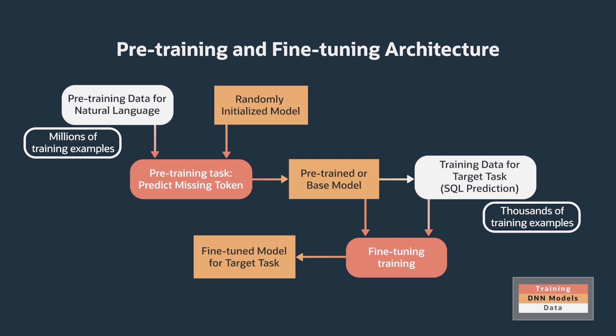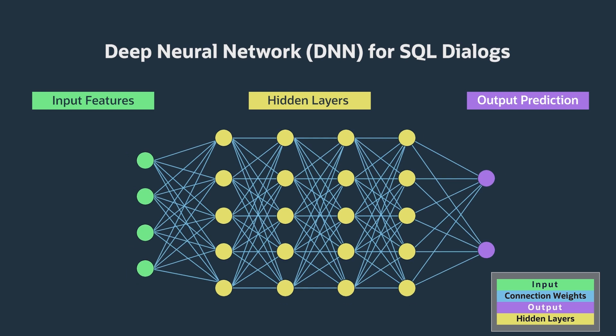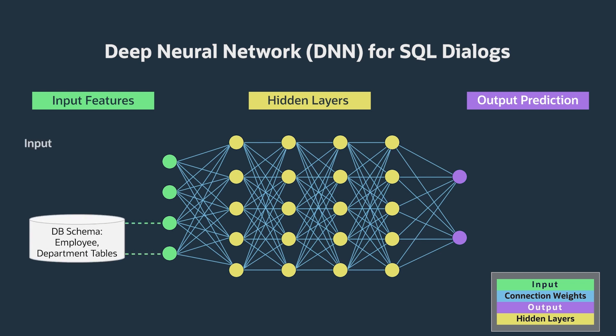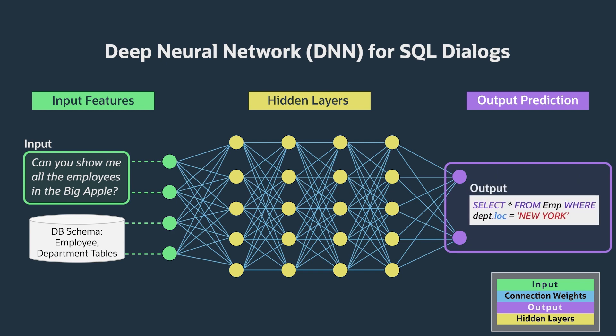This simplifies the training process, since the same generic model can be leveraged to generate multiple types of task-specific models, and it significantly reduces the task-specific training data requirements. We actually handle the training for our customers. We have different datasets that we use for the different stages of training. This lets SQL Dialogs run out of the box with no data supplied from the customer. Instead, we use the customer's database schema together with the customer's query to provide the necessary information the SQL Dialogs model needs to produce the SQL output.